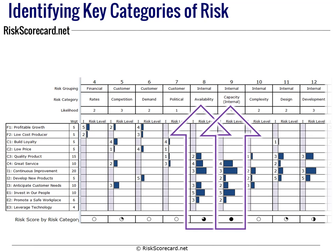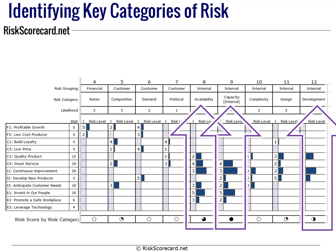We also have significant risk associated with capacity, and over here under development. This analysis begins to show us the risk categories that need to be covered off in more detail in our risk register. You'll then go off and interview your leadership team to find out what specific risks they can identify within those categories.